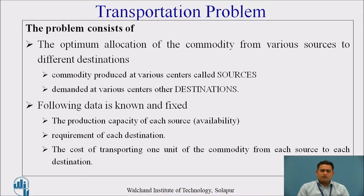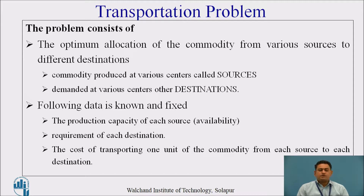The following data should be known or fixed: first, the capacity of production of the particular source, that is the availability; and the requirement of each destination. Along with that, you should know the cost of transportation of one unit of the commodity or product from one source to another destination.